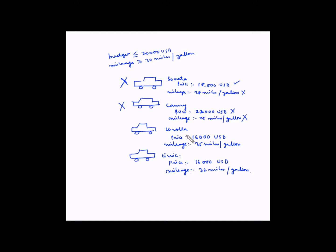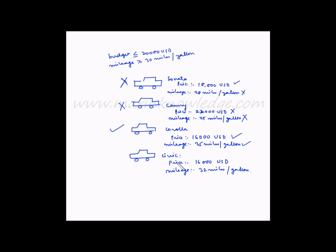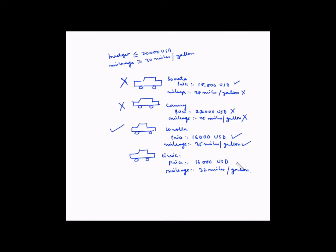For the Corolla: price is $16,000 which is less than $20,000 — constraint met. Mileage is 35 mpg which is more than 30 mpg — constraint met. So the Corolla meets both constraints. For the Honda Civic: price is $16,000 — constraint met. Mileage is 32 mpg — constraint met. So the Civic also meets both constraints. The Sonata and Camry do not meet the constraints, while the Corolla and Civic both do.